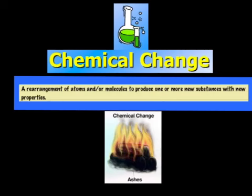So in a chemical change, new matter is always formed. For example, if we take a look at that same log we were chopping earlier, and instead of chopping it we burn it, we see that instead of having a log left over, we have ashes left over. So new matter was formed in that change.